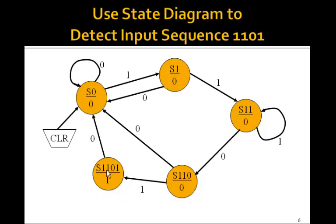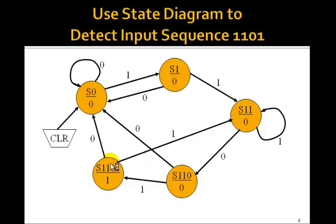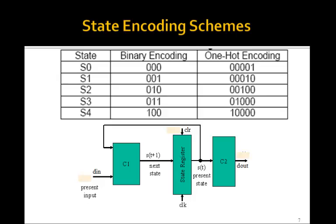But suppose you're in the final state — you've detected 1,1,0,1 — and now you get another 1: where do you go? You actually go back to S11, because this sequence can overlap. So you've got 1,1,0,1 and that last 1 starts a new potential sequence. So this state diagram is the solution to the problem of detecting 1,1,0,1. In the next lesson we'll see how to actually implement this on an FPGA. But we'll use this Moore machine — here's the state diagram for a Moore machine.